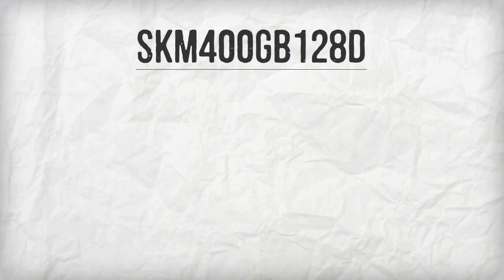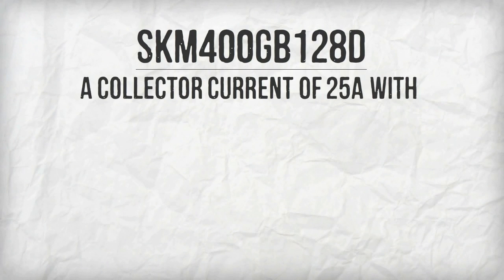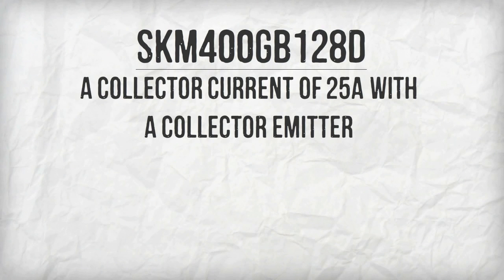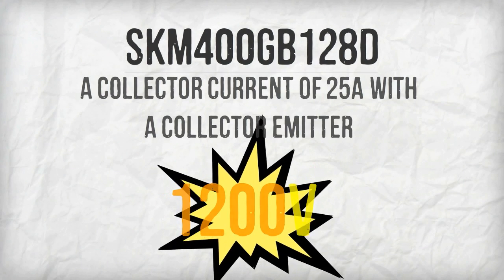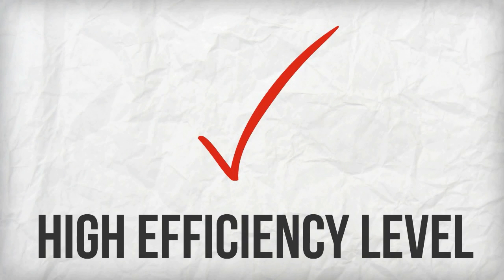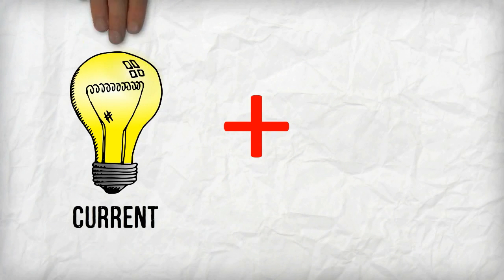SKM400GB128D has a collector current of 25 amps with a collector emitter of up to 1200 volts, ensuring the user of its high efficiency level. It provides both current and voltage gain.